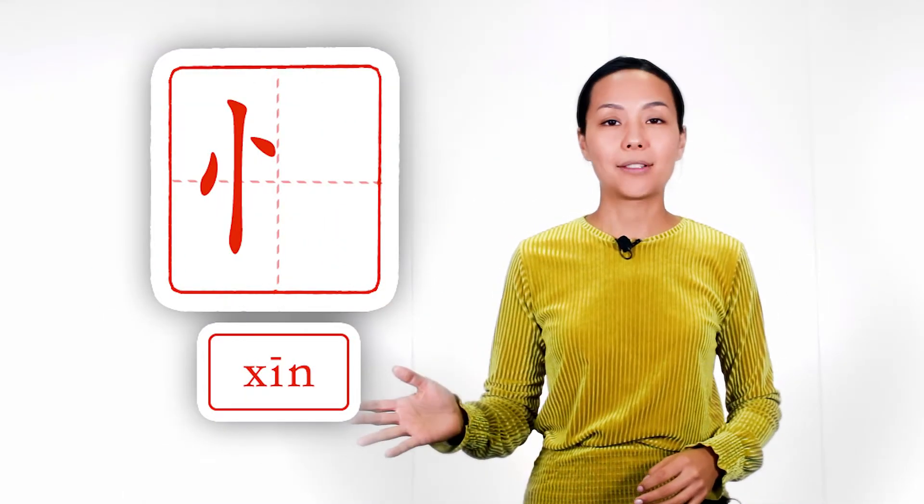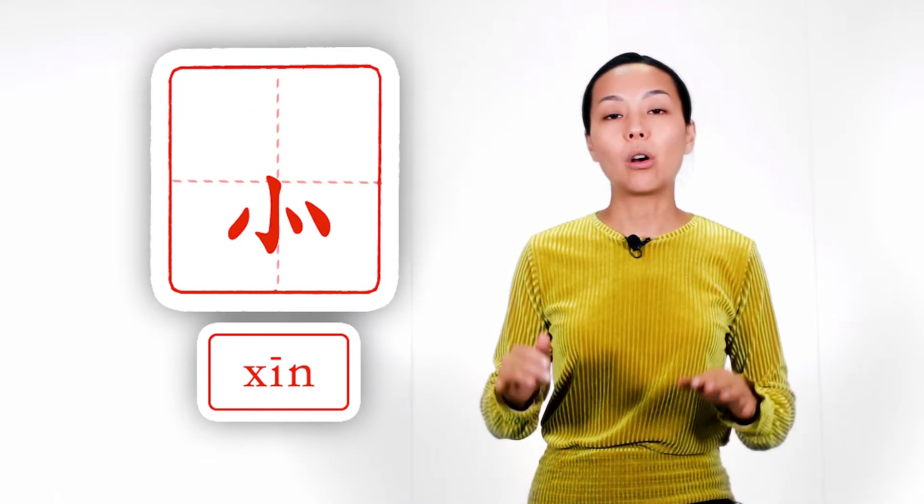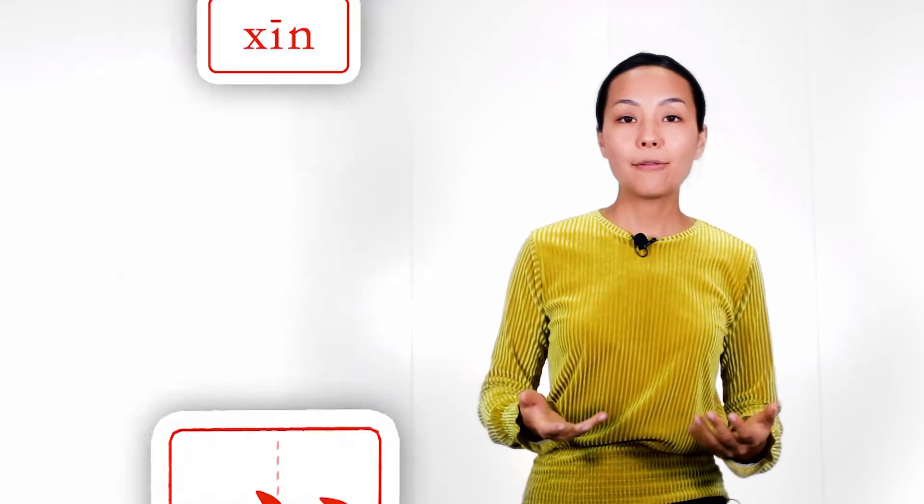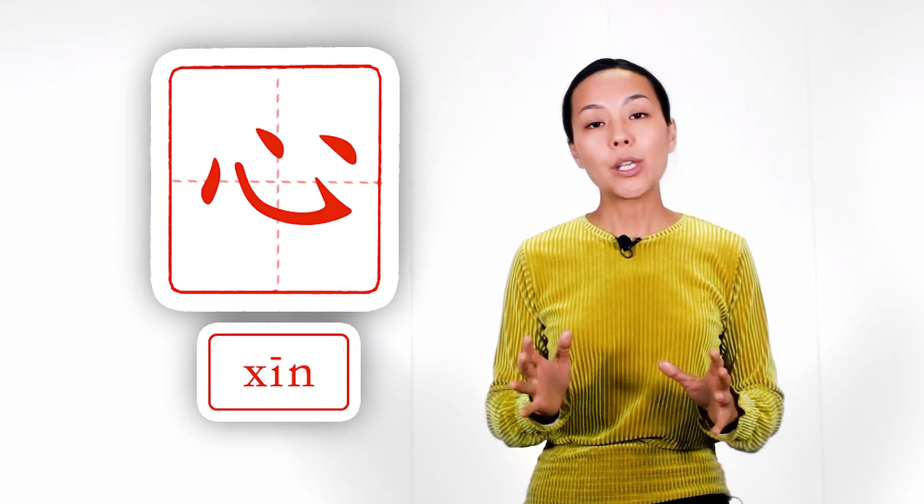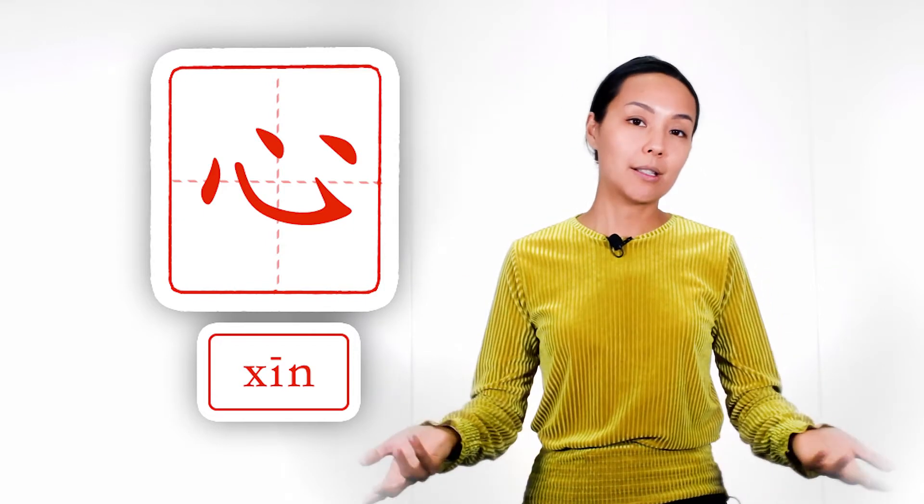It has three forms and all of them you will see as part of characters. This form you will see only on the left and this form you will see only below. And the main form we will see below and inside. And we use it as a separate word and it means heart. Let's look how we draw it.